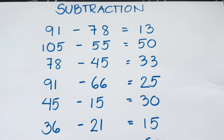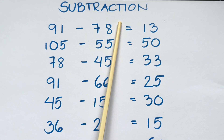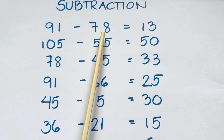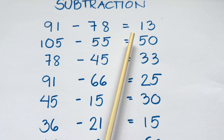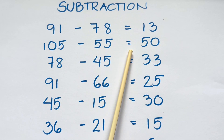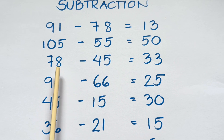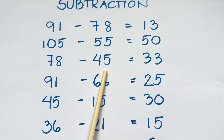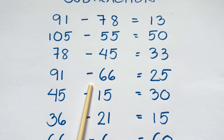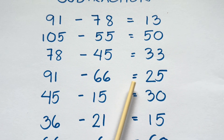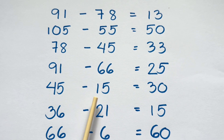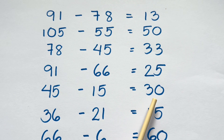Let's summarize. Subtraction. Ninety-one minus seventy-eight is equals to thirteen. Hundred-five minus fifty-five is equals to fifty. Seventy-eight minus forty-five is equals to thirty-three. Ninety-one minus sixty-six is equals to twenty-five. Forty-five minus fifteen is equals to thirty.